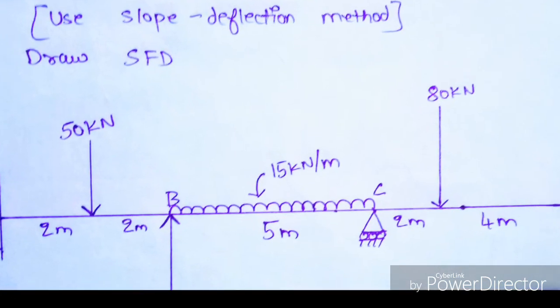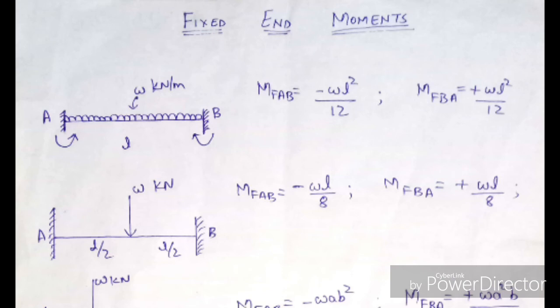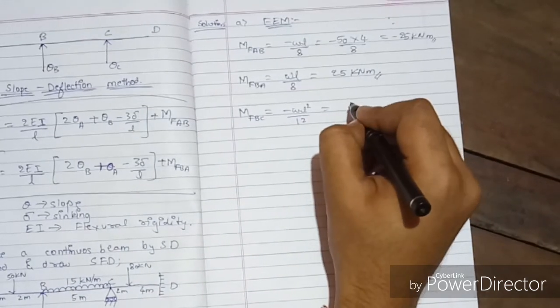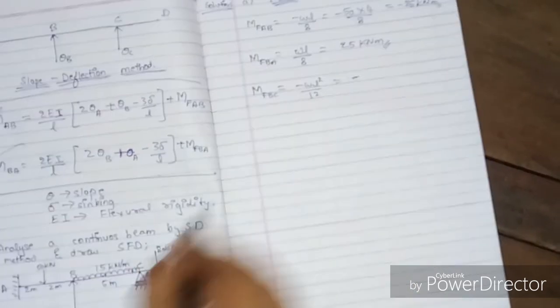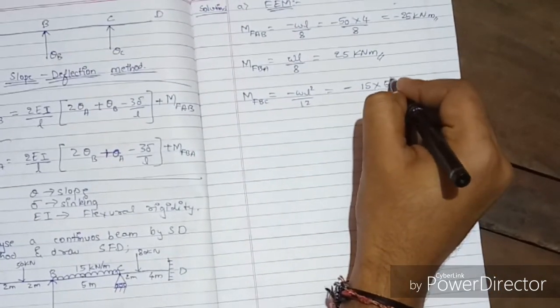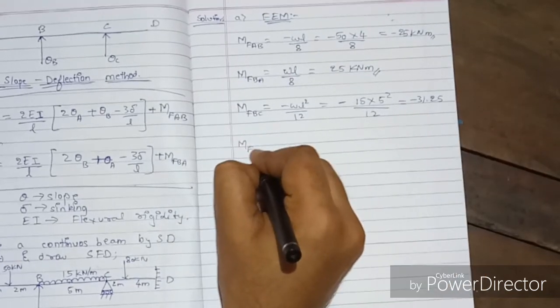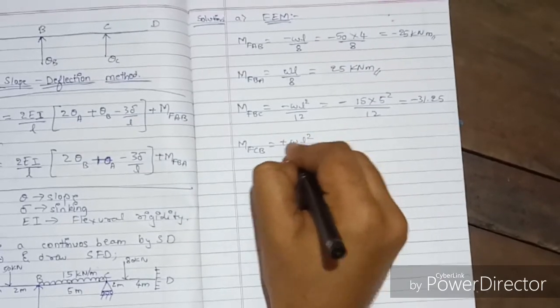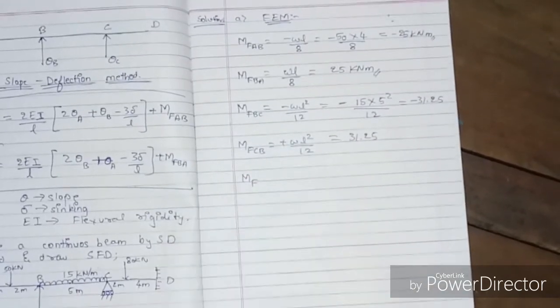Now shift to span BC. There is a UDL of 15 kN/m over a length of 5 meters. From the fixed end moment chart, for a UDL: MF_BC = −WL²/12 and MF_CB = +WL²/12. So MF_BC = −15×5²/12 = −31.25 kN·m, and MF_CB = +31.25 kN·m.